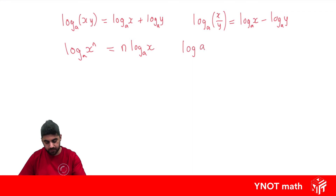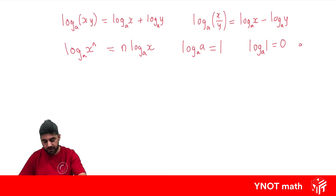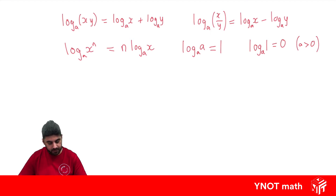The log of a number with the same base as the number gives us 1. The log of 1 with any base gives us 0, as long as the base is greater than 0 — and this is actually the case for all these logs. If we have a base to the power of a log of a number with the same base, we're just going to get the number inside the log.